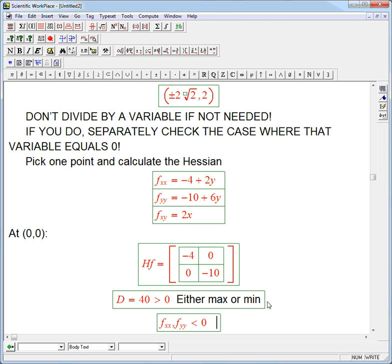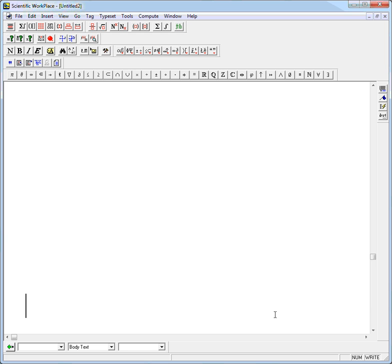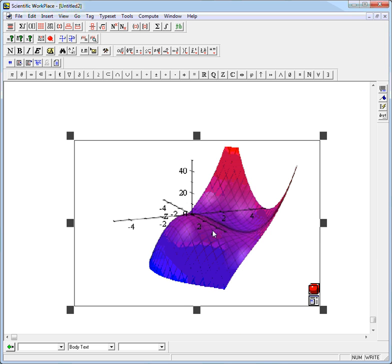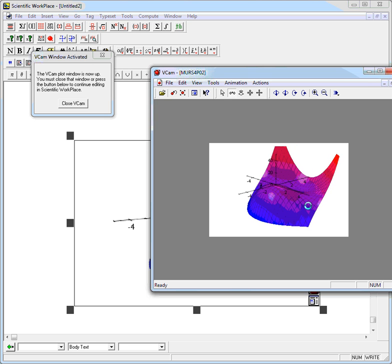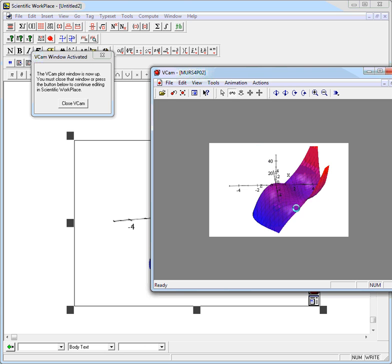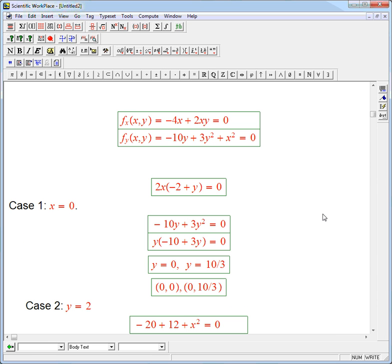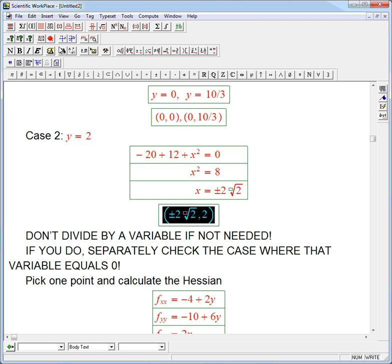It's a local or relative max, definitely not necessarily a global max. Now let's see what the graph looks like. You can see at the origin, it's a nice little local max, but it's definitely not the absolute max of this function. We could have figured that by the fact that it's only even powers in x. What you've got is another local min at (0, 10/3), and then there's a saddle here and a saddle here at the plus or minus 2√2, 2 points.